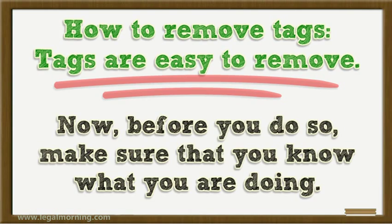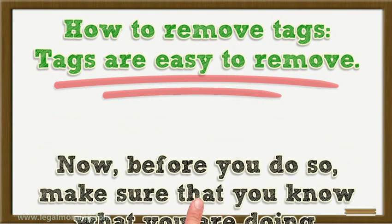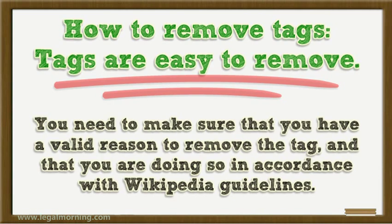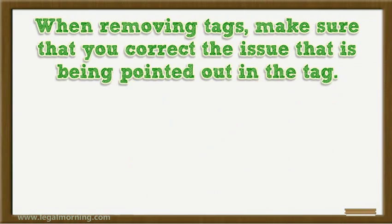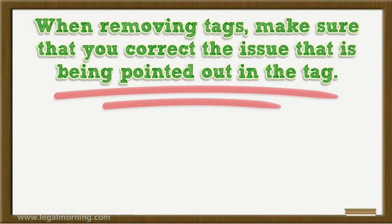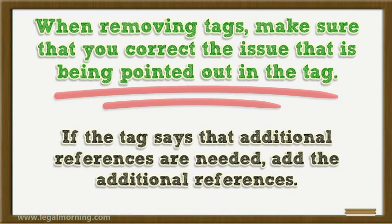Before you do so, make sure that you know what you are doing. You need to make sure that you have a valid reason to remove the tag and that you are doing so in accordance with Wikipedia guidelines. Just because you know how to remove them does not necessarily mean that they should be removed. When removing tags, make sure that you correct the issue being pointed out. If the tag says that additional references are needed, add those references.